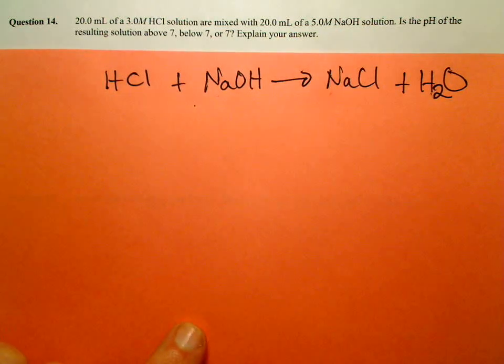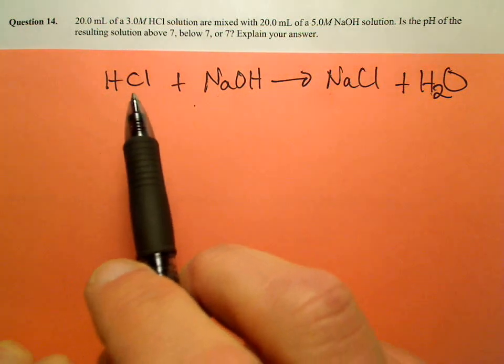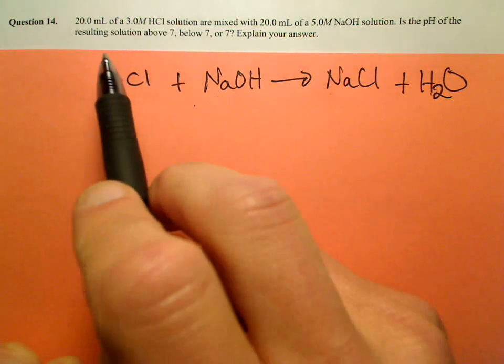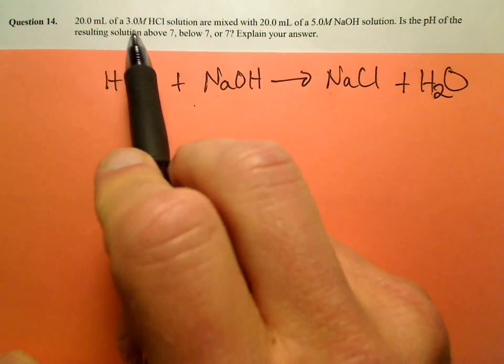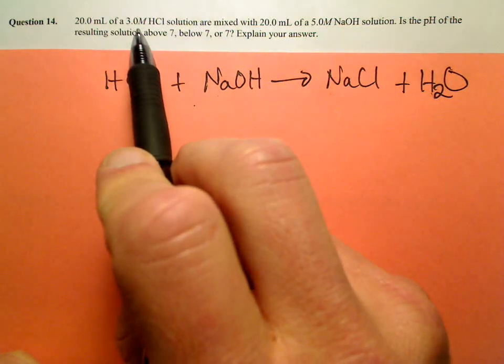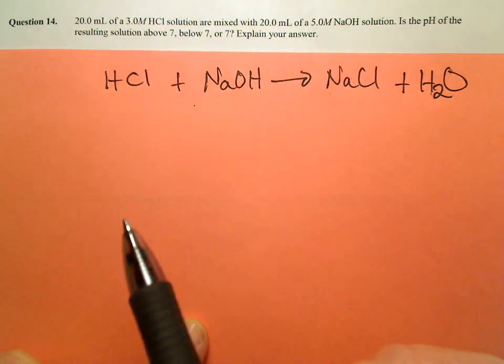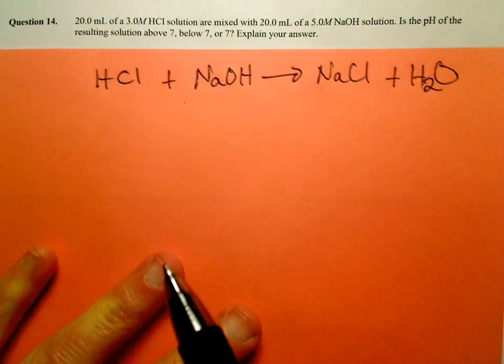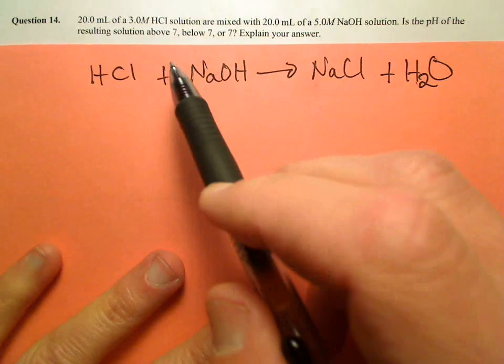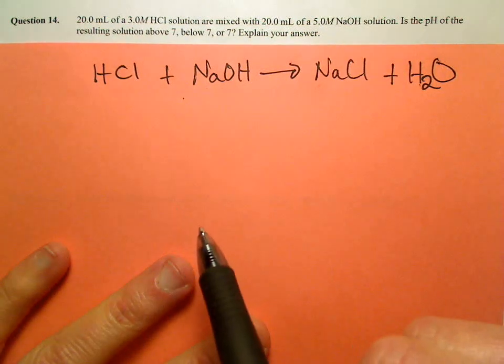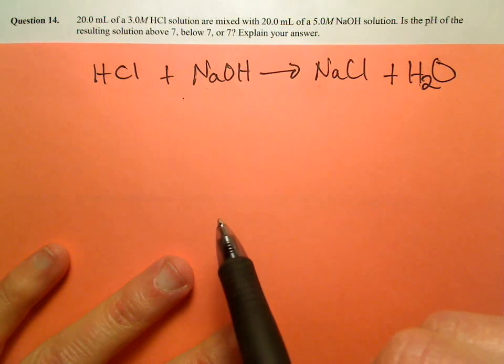So let's look at this in light of the whole idea of limiting reactant. Which have we added more moles of? 20 milliliters of a three-molar solution for HCl or 20 milliliters of a five-molar sodium hydroxide solution. Well, if we look at this, we know that we've added more moles of hydroxide ion than we have of HCl.